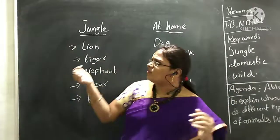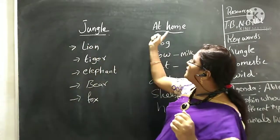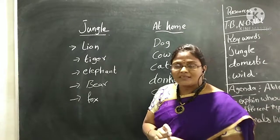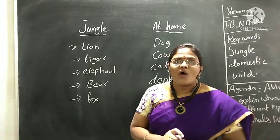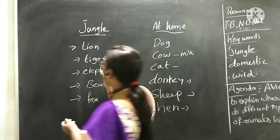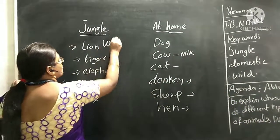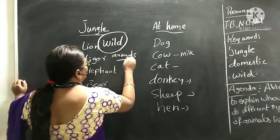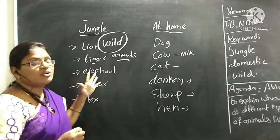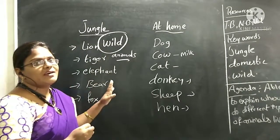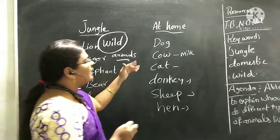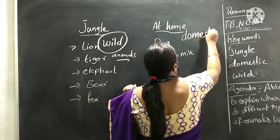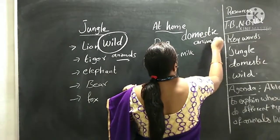Then what do we call these animals? The animals which are dangerous and harmful to us — we call them wild animals. Don't forget: the animals which are dangerous, like lion and tiger, which live in the forest and are not living near us, we call them wild animals. And the animals near our home we call domestic animals.